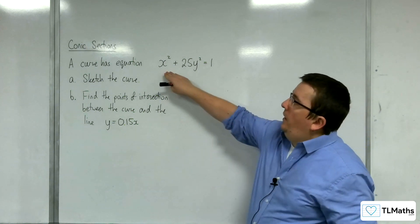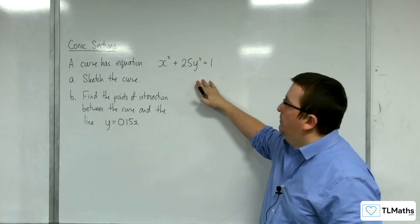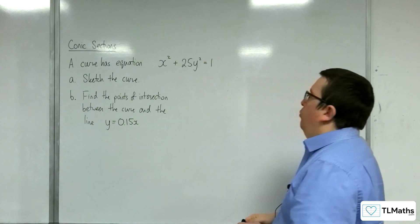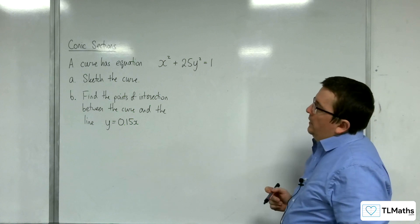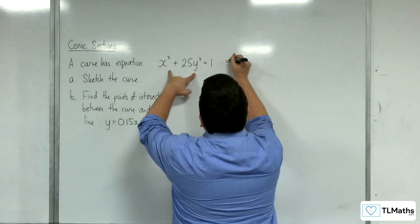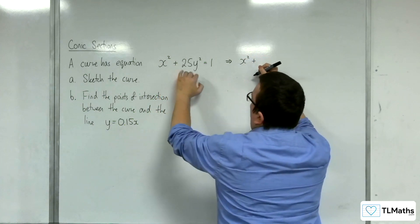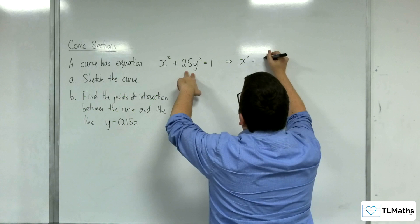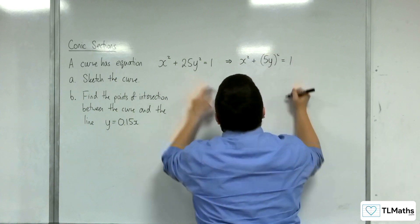This is in a slightly different format than we had in the previous couple of videos for an ellipse. What you probably want to do here is to write this as x squared plus, and then think about this as 5y all squared equals 1.